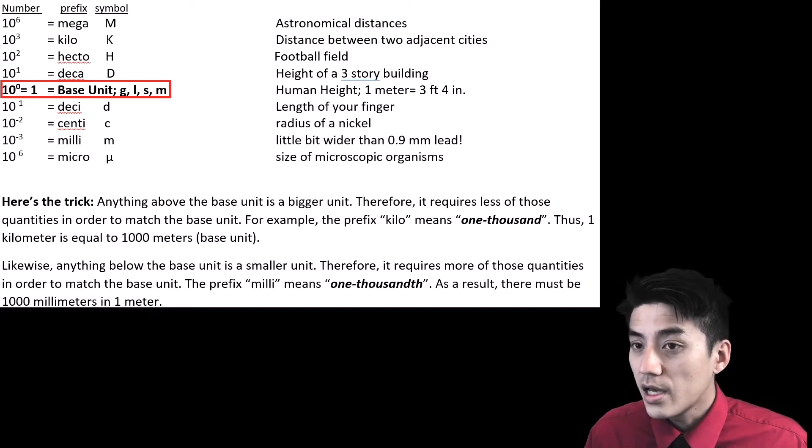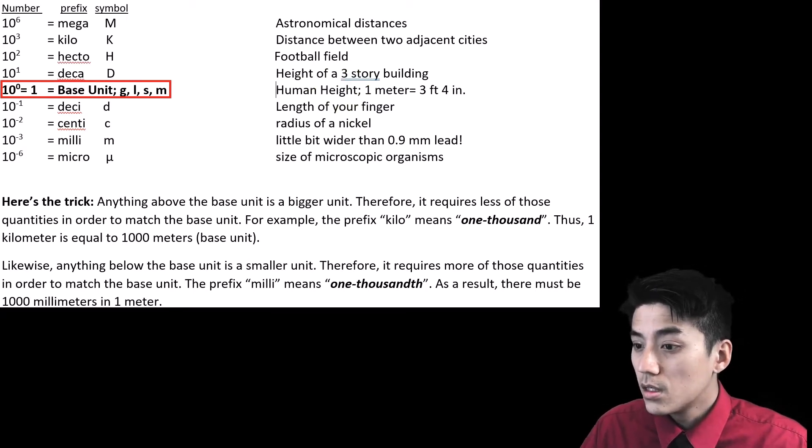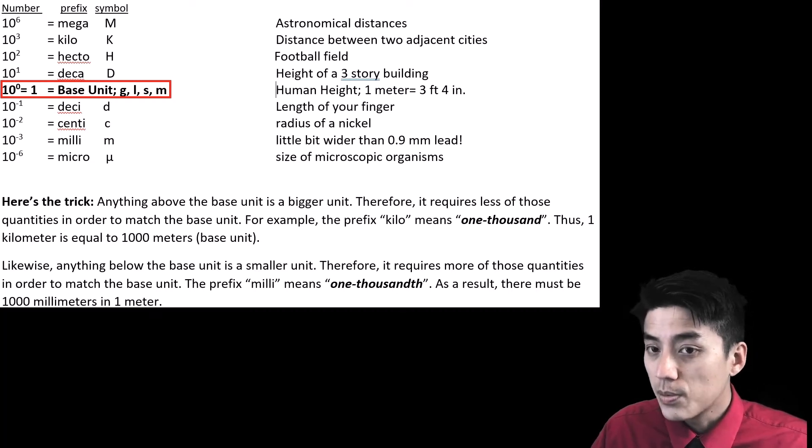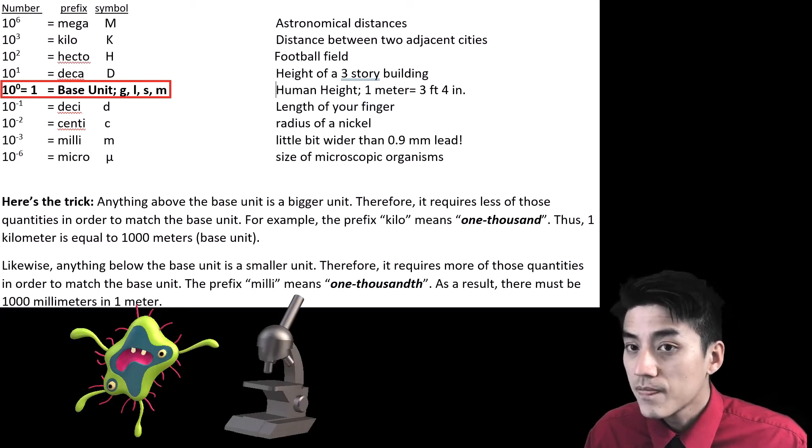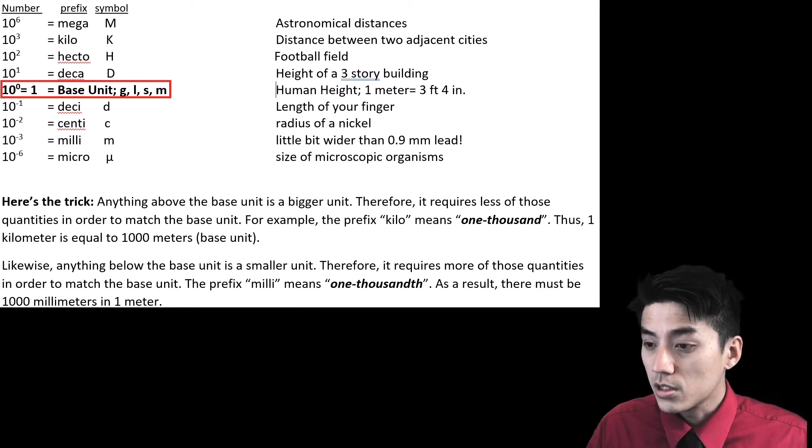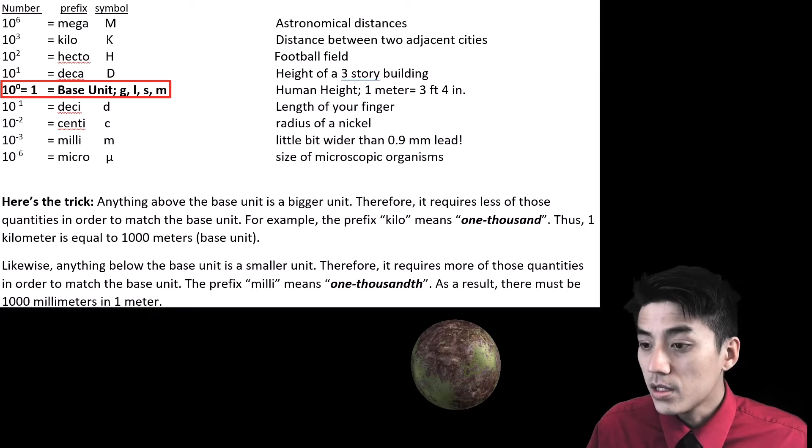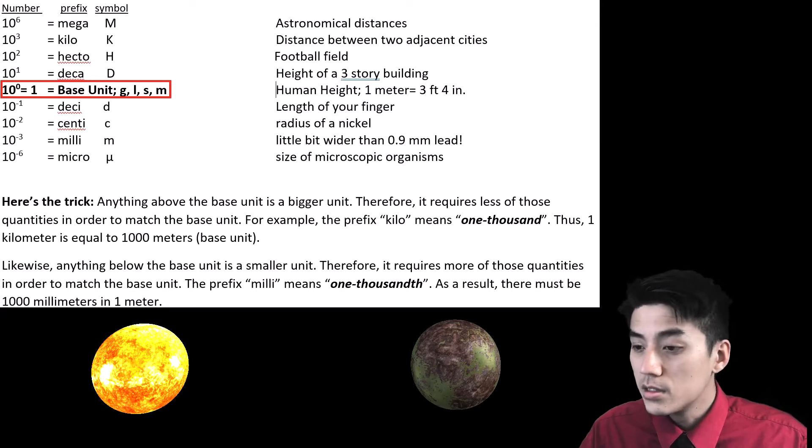You can see off to the side, I gave you little notes to give you a visual on the sizes of these units. For example, the smallest one there, micro, would be the size of small microorganisms, things that are microscopic. Whereas if you're climbing the metric scale and you go up, a mega would be suitable for expressing the distance between suns and different stars and planets.